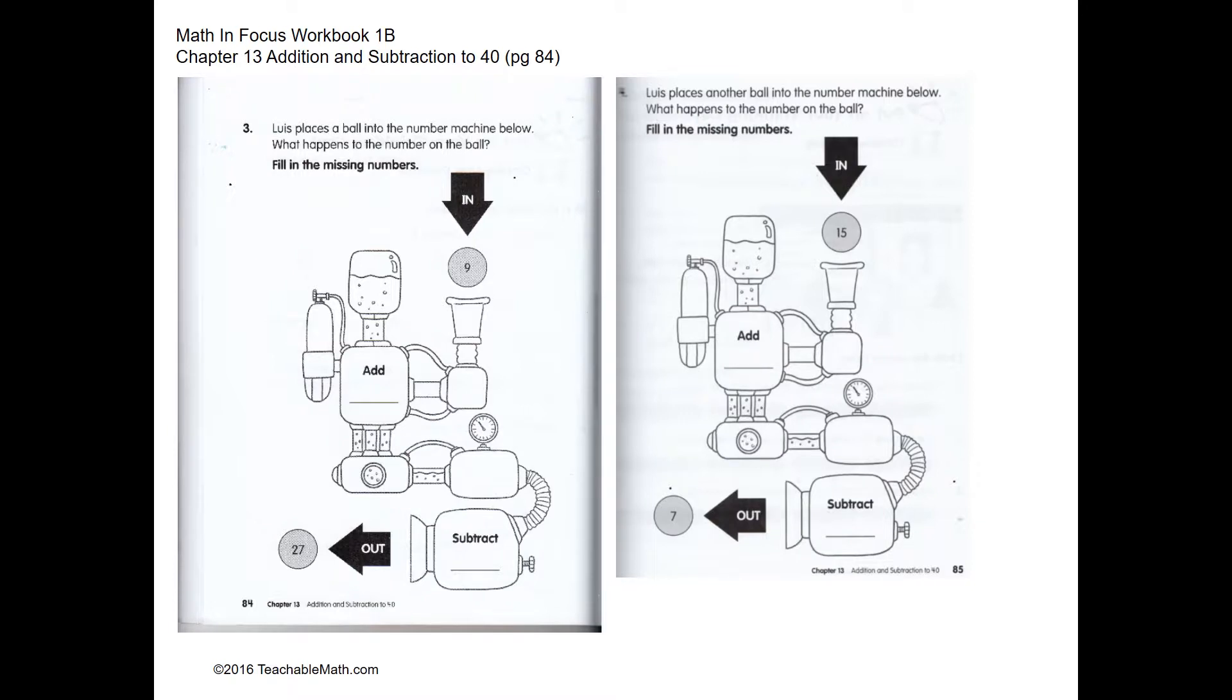This is a number machine and kids have a lot of fun doing this. There are many numbers we can use. We have the input number which is nine. We can add 20, that will give us 29. And to get 27 we have to subtract two.